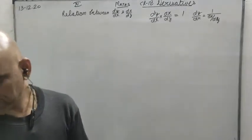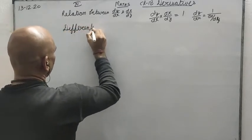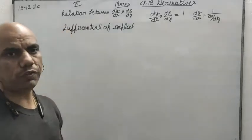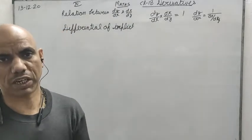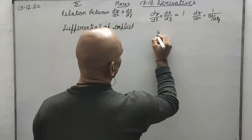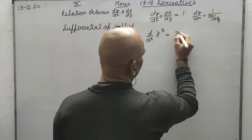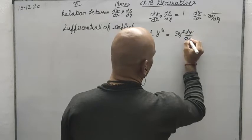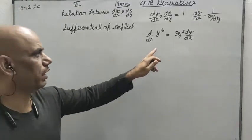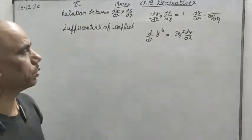Another thing we want to study is the differential of implicit function. So when we differentiate a function y with respect to x, this is known as the differential of implicit function. For example, if we are doing the differential of y cube with respect to x, it will be 3y squared dy by dx. Whenever we find the differential of y with respect to x, that is known as differential of implicit function. In the next exercise, we are going to solve questions like this.